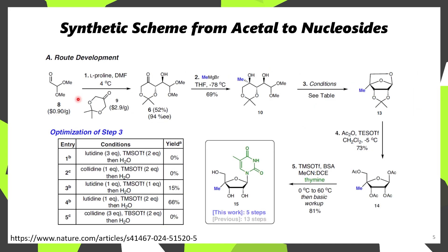This strategy employs the use of a proline-catalyzed aldol to set the stereochemistry of the corresponding aldol adduct, which affords product 6 in 94% enantiomeric excess. It's then possible to add methylmagnesium bromide to this, forming the tertiary alcohol 10. Then, using various different conditions that they screened, which ultimately led to the use of two equivalents of TMS triflate, they're afforded with product 13.